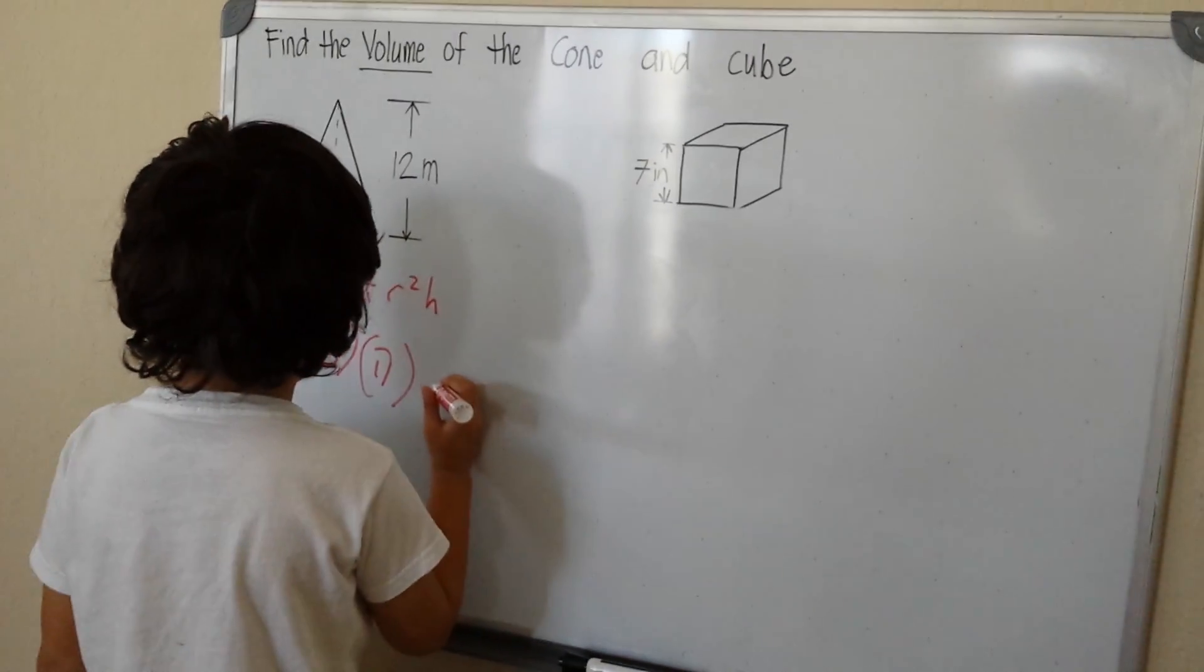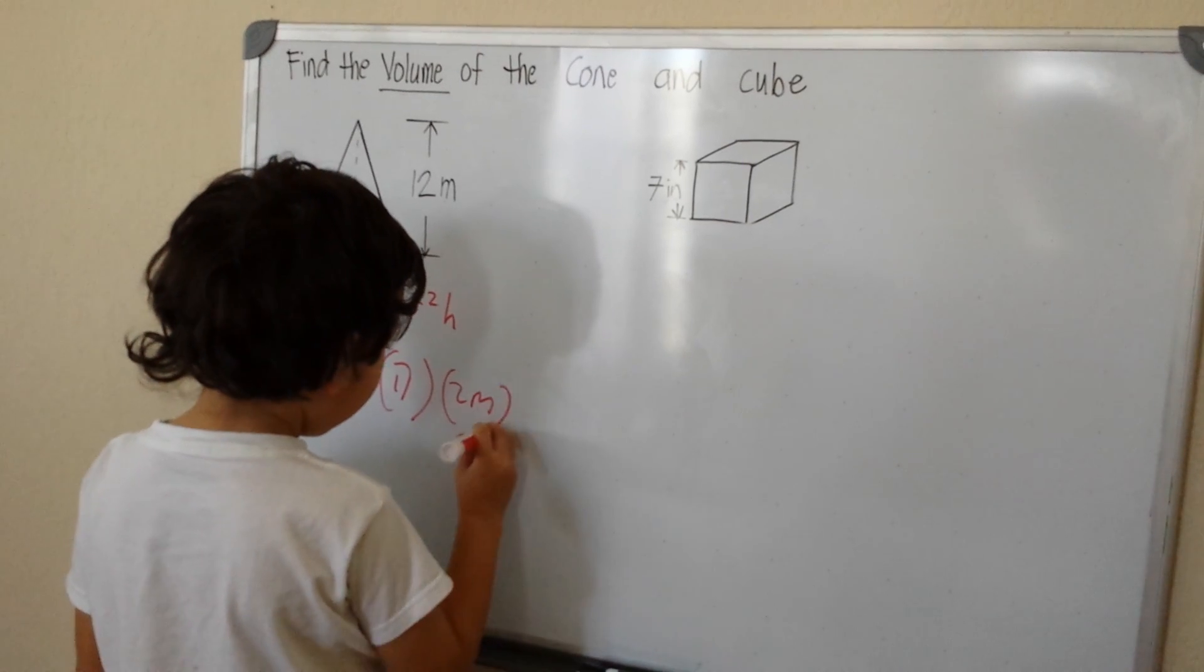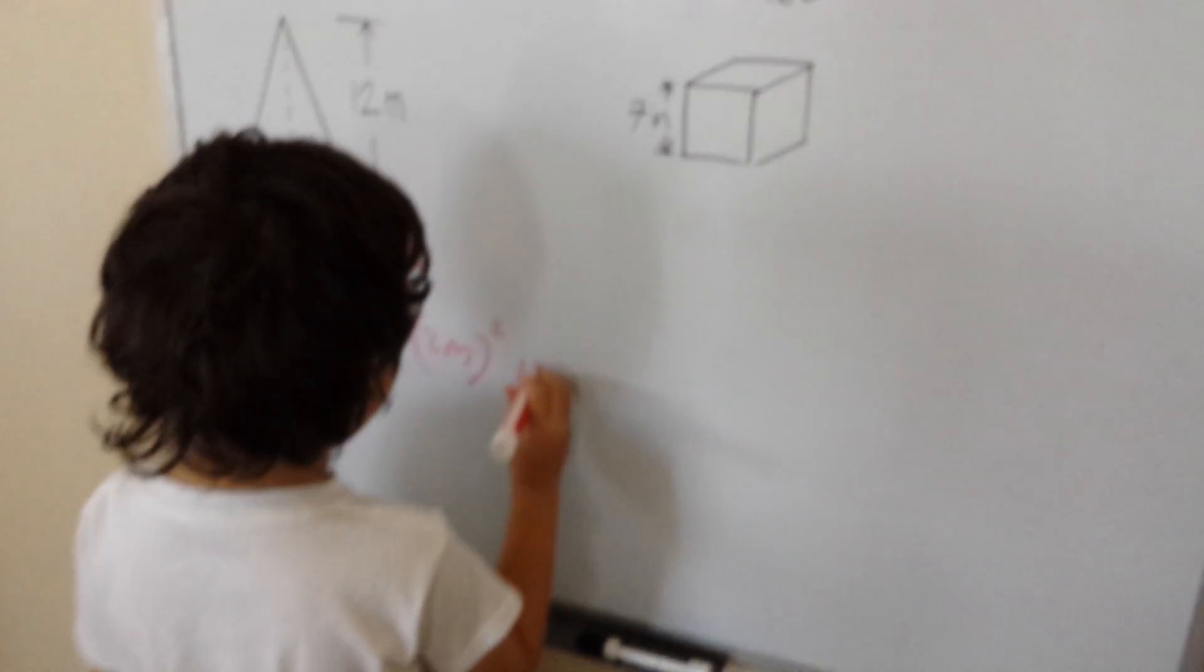What's our radius? It's 2 meters squared. Then our height is 4 meters.